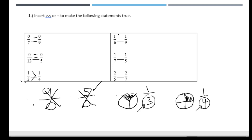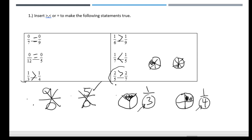One sixth is greater than one ninth, and one fifth is greater than one seventh. If one fifth is bigger than one seventh, then two fifths will also be larger than two sevenths. That's how you can deal with those comparisons.